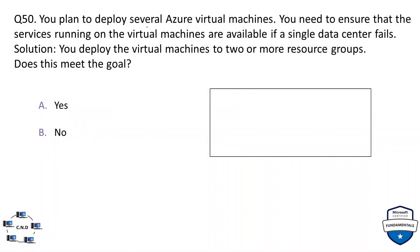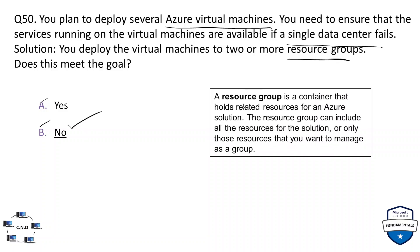Question 50: you plan to deploy several Azure VMs and need to ensure services remain available if a single data center fails. Solution: deploy the VMs to two or more resource groups. Does this meet the goal? The answer is no. A resource group is simply a container that holds related resources for an Azure solution — it is a management concept and is not a high availability solution.